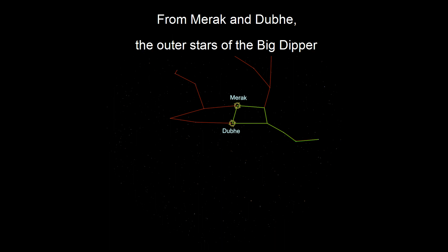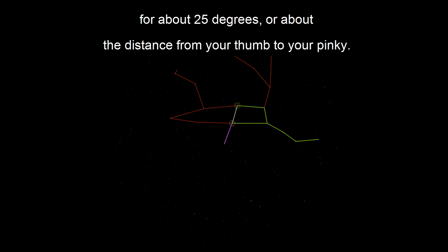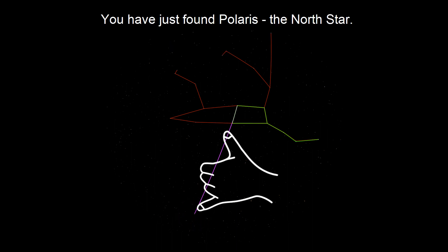From Merak and Dubhe, the outer stars of the Big Dipper, we can trace a straight line for about 25 degrees, about the distance from your thumb to your pinky. And you've just found Polaris, the North Star.